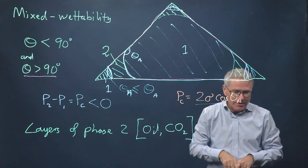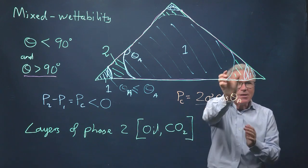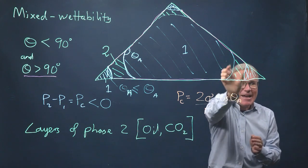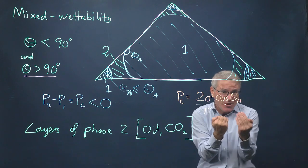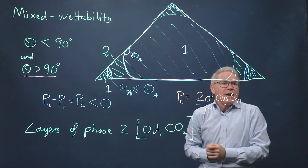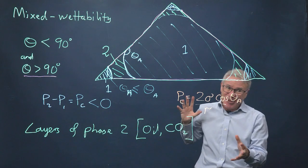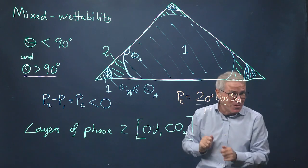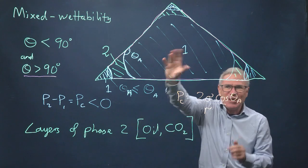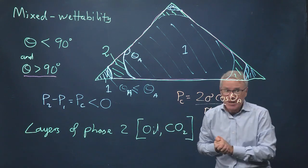So what are the consequences for this? Well, the first one is that by leaving these layers, which makes sense because phase 2 is wetting to the surface, it likes the surface, by doing this, it's more difficult for phase 2 to be trapped because you don't have so much snap-off. You only have snap-off in the water-wet regions. You have this piston-like advance, and these layers retain connectivity.